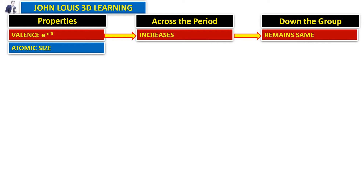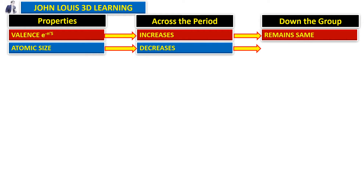Next is atomic size. What happens when we move across the period — it decreases. And what happens when we go down the group — it increases. Notice that almost all properties show opposite variation across the period versus down the group, so if you learn one thoroughly, the other can be easily remembered.